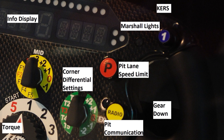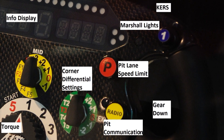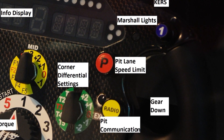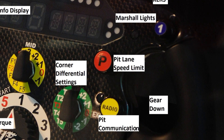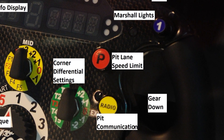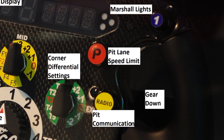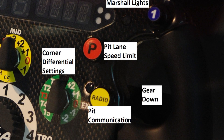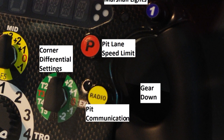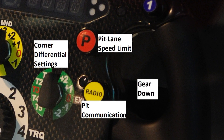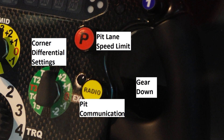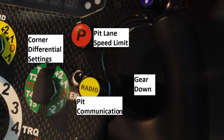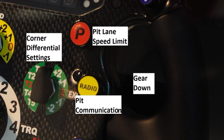Moving down, you can see behind there — it's kind of dark — but that's where the gear down paddle is. Right to the left of that is the pit communication button, the radio button. So if you need to communicate with your pit crew, that's the button you push.